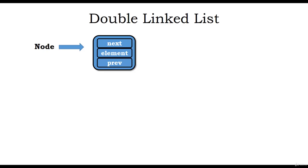Let us look at how double linked lists are created. Each element in the collection will have a node. A node will be created for element 10, and this node will have its next member as well as previous member assigned as none or null.